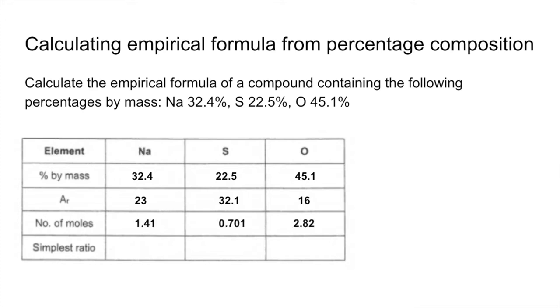Remember, three significant figures. And then divide by the smallest, which in this case is that middle one, 0.701. So we get a 2.01 to 1 to 4.02 ratio.